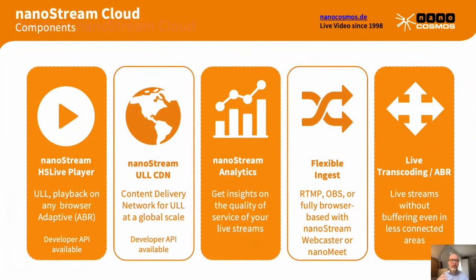NanoStream Cloud is unique as a combination of software and services for ultra-low latency live streaming. It has: a global CDN for ultra-low latency live delivery at any scale; a very lightweight player easy to embed on any web application; good tools for quality-of-service insight with a metrics and analytics service; flexible ingest options supporting any camera, encoder software, or hardware; and a unique live transcoding adaptive bitrate control built into the player, adjusting automatically to the best quality available even in hostile network situations.